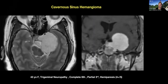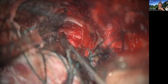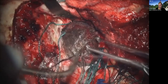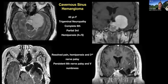For tumors where the temporal lobe is going to have to be manipulated extensively — such as a large cavernous sinus hemangioma — we perform an orbitozygomatic approach. There are two variants: the full OZ, or just the zygoma alone if you need to go low in the middle fossa temporal lobe area but not the frontal lobe. The orbital bar minimizes frontal lobe retraction; the zygomatic osteotomy minimizes temporal lobe damage. For this patient we did a full OZ for complete tumor resection of this cavernous sinus lesion.